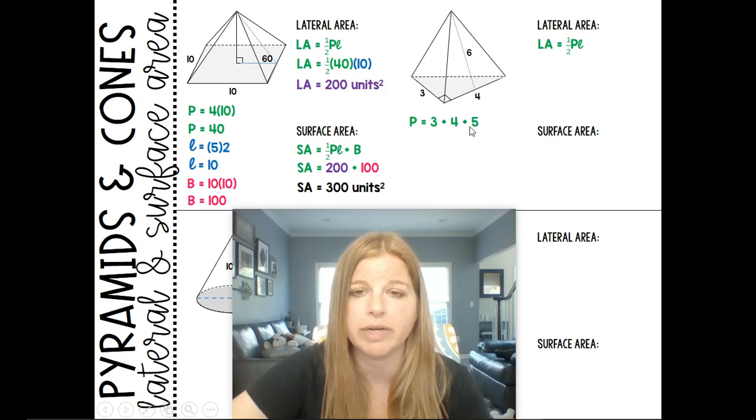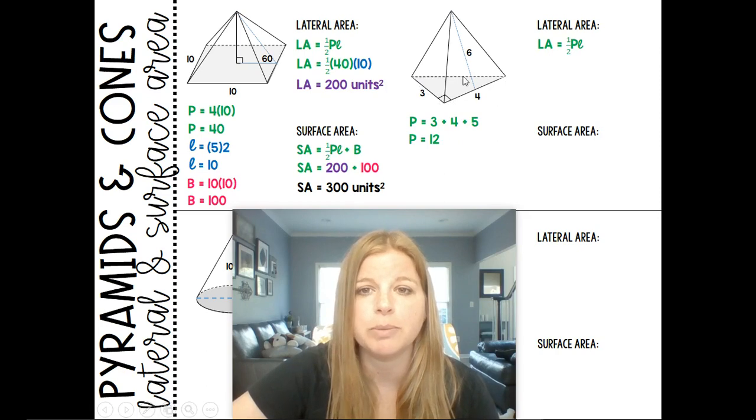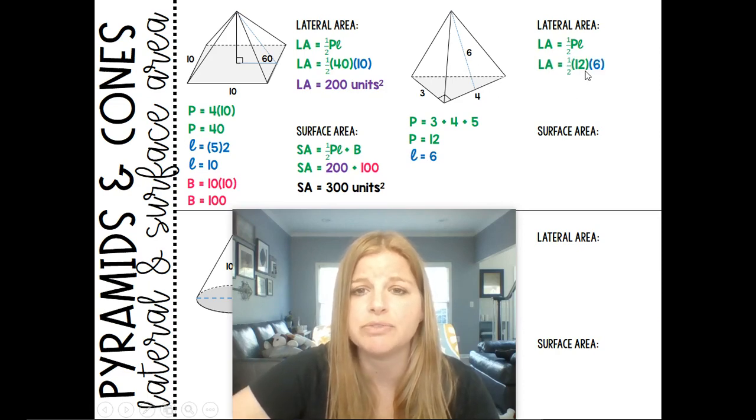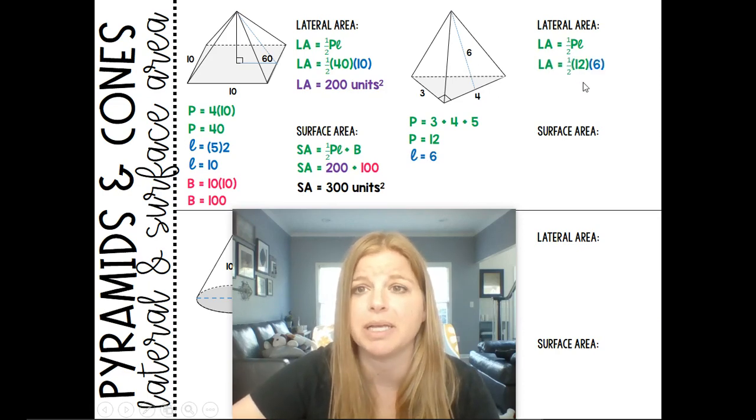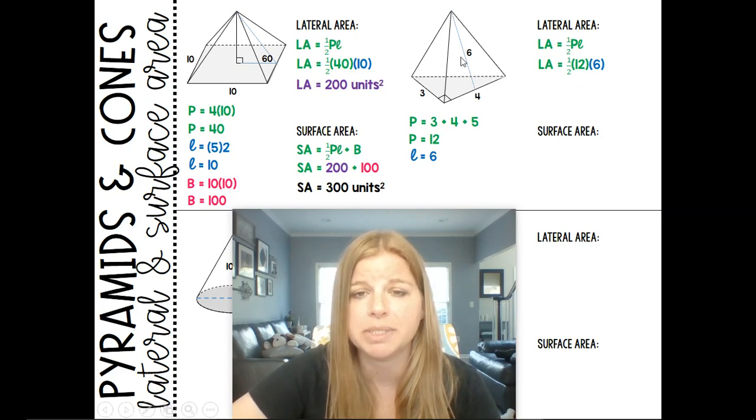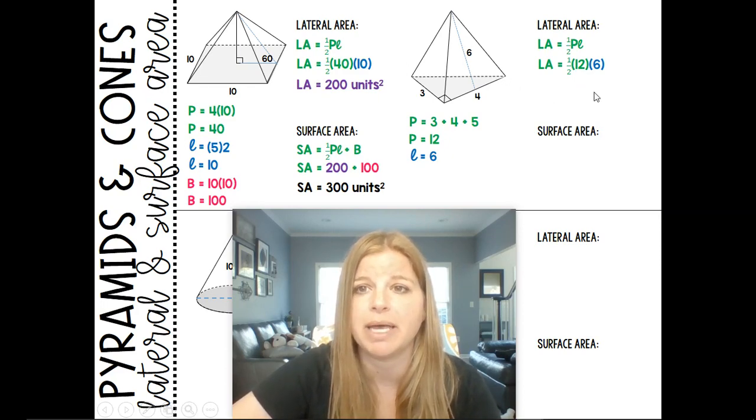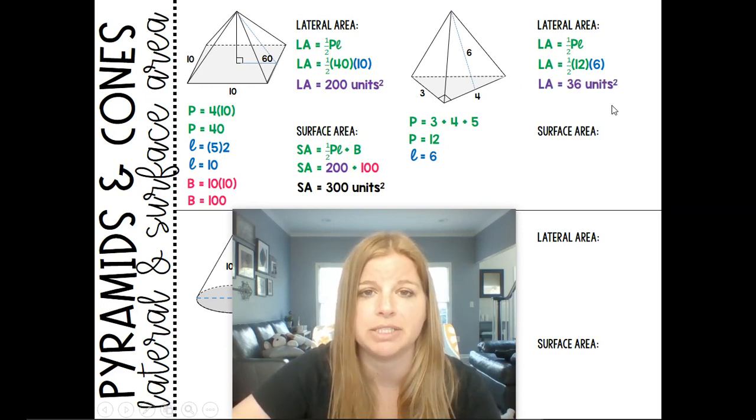Okay, your classic 3, 4, 5 in a right triangle. That means this perimeter has a base of 12, a perimeter of 12 rather. My slant height we see is 6, and so this formula is actually pretty quick to plug in. It's 1 half times the perimeter of that base times my slant height, and I get 36 units squared.